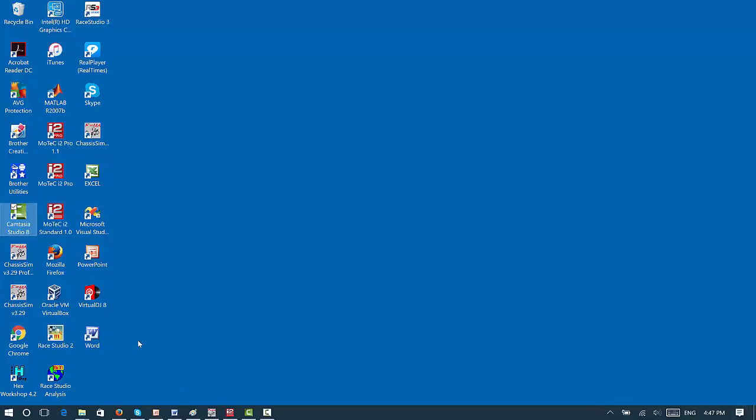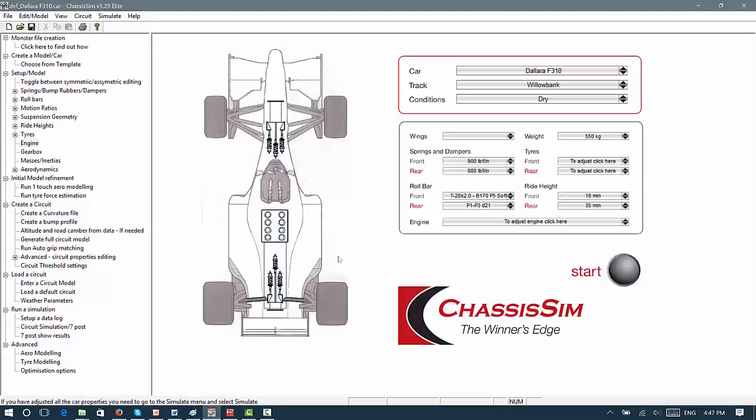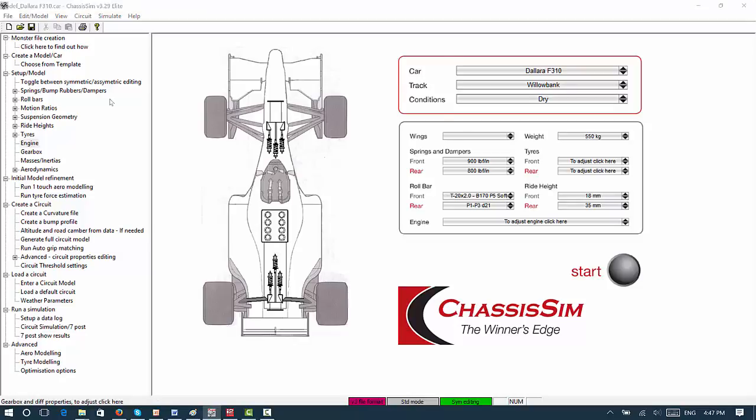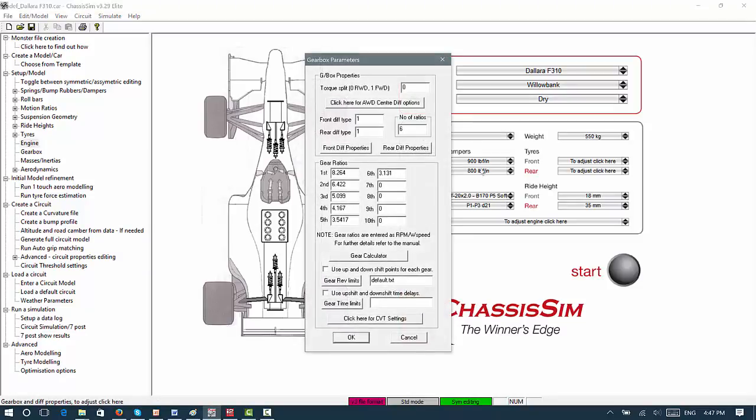Okay, so a couple of things to bear in mind. What you'll do with ChassisSim, you'll go through, you'll set up your vehicle model. Now, if you click on either the gear, on the bell housing, or the gearbox, you'll see here that in diff type, you've got a number of diff types to choose from. One is the open diff, two is the super diff, three is the locked diff, and four is the LSD.